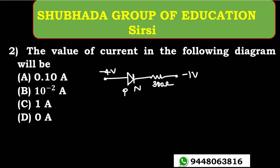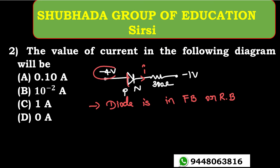The next problem: the value of current in the following diagram will be — find the current I flowing through the circuit. When you see a diode in a circuit, first check whether it is in forward bias or reverse bias condition. Here, the P-type is connected to minus 4 volts and the N-type is connected to minus 1 volt.